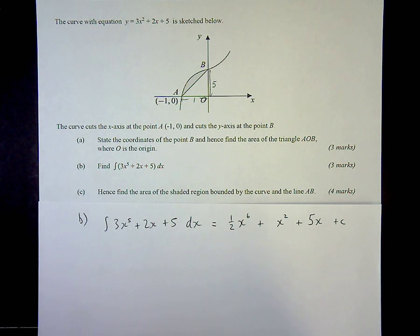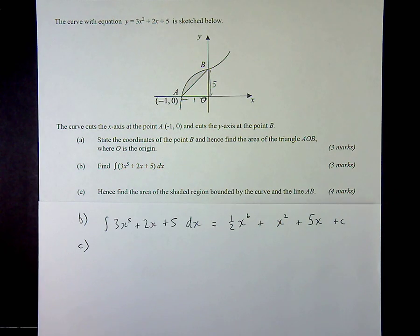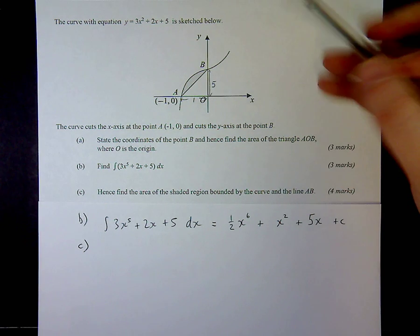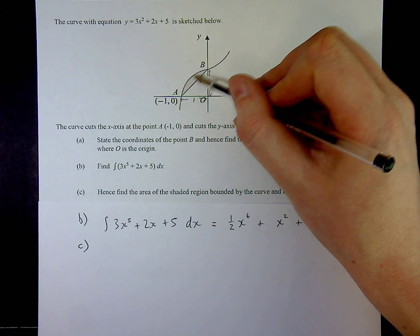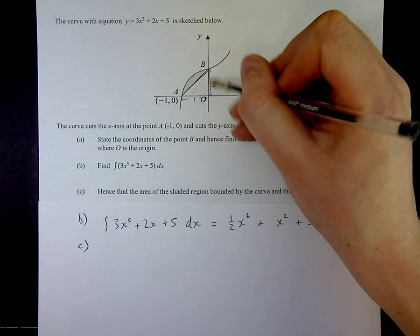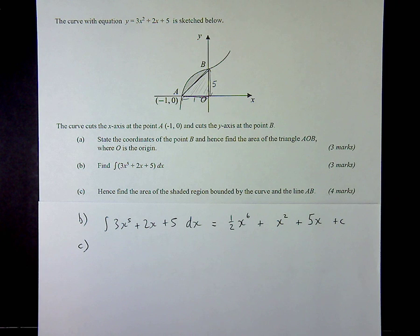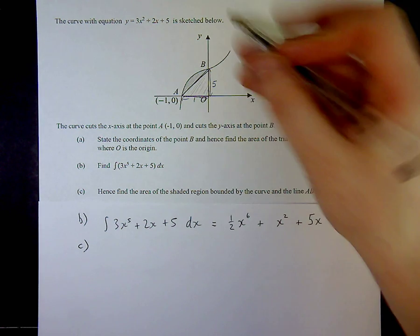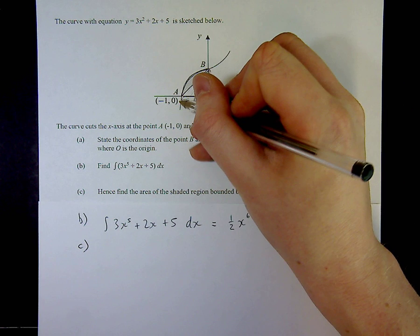For part C, it says hence find the area of the shaded region bounded by the curve and the line AB. Now if I look at this shaded region here, I can see that I can work it out by finding the whole area underneath the curve and then subtracting the area of the triangle, which I found for part A was 2.5 square units. So all I need to do is find the area underneath the curve between negative 1 and 0.